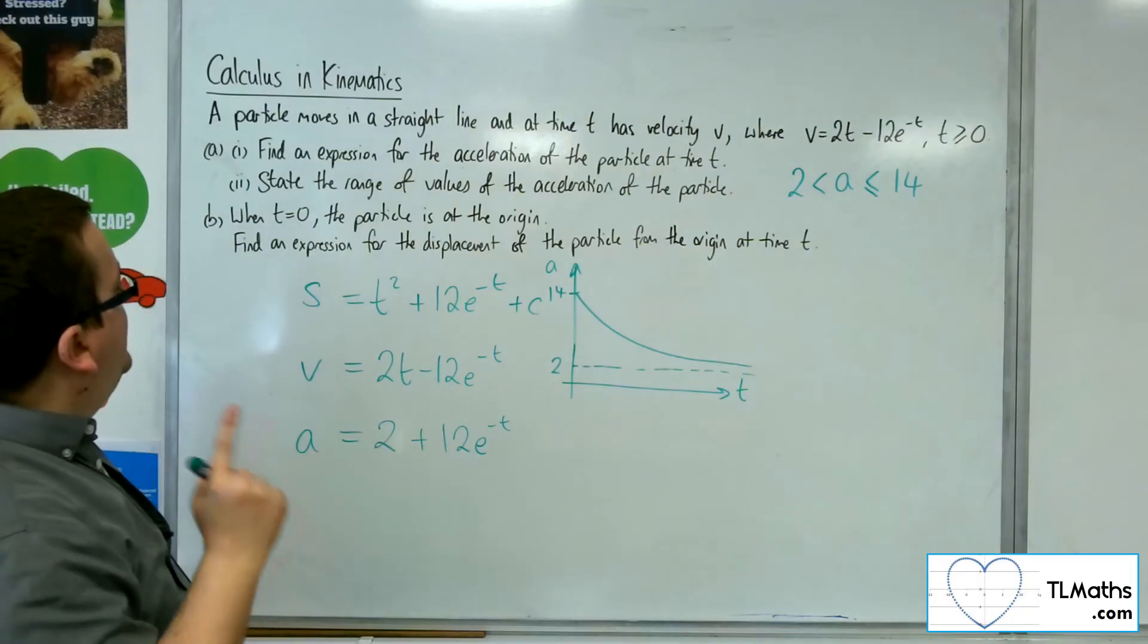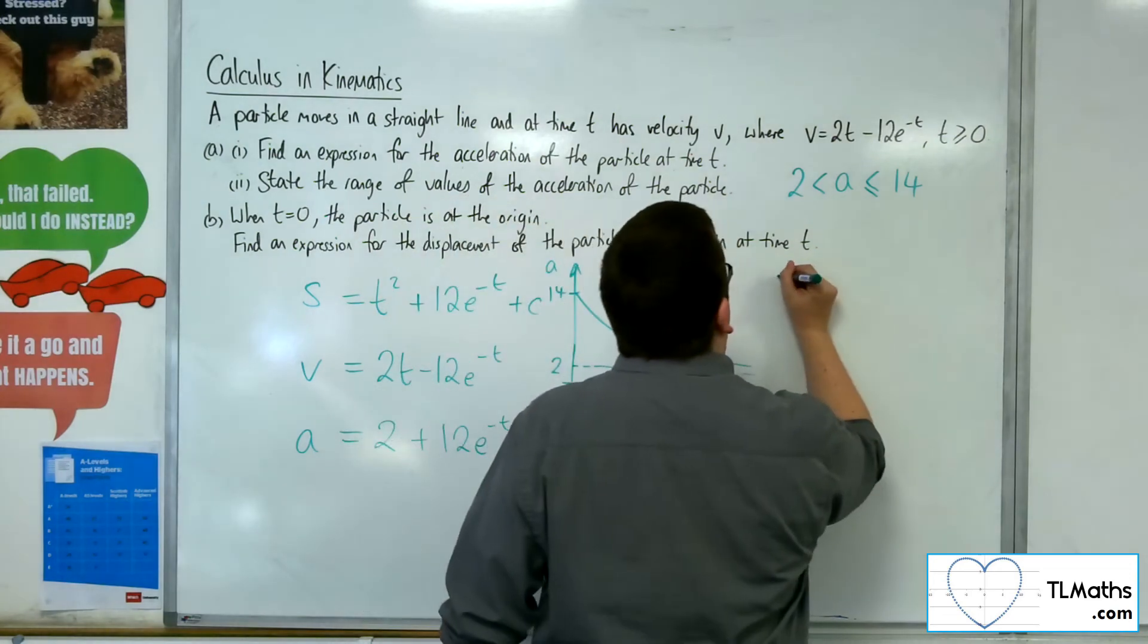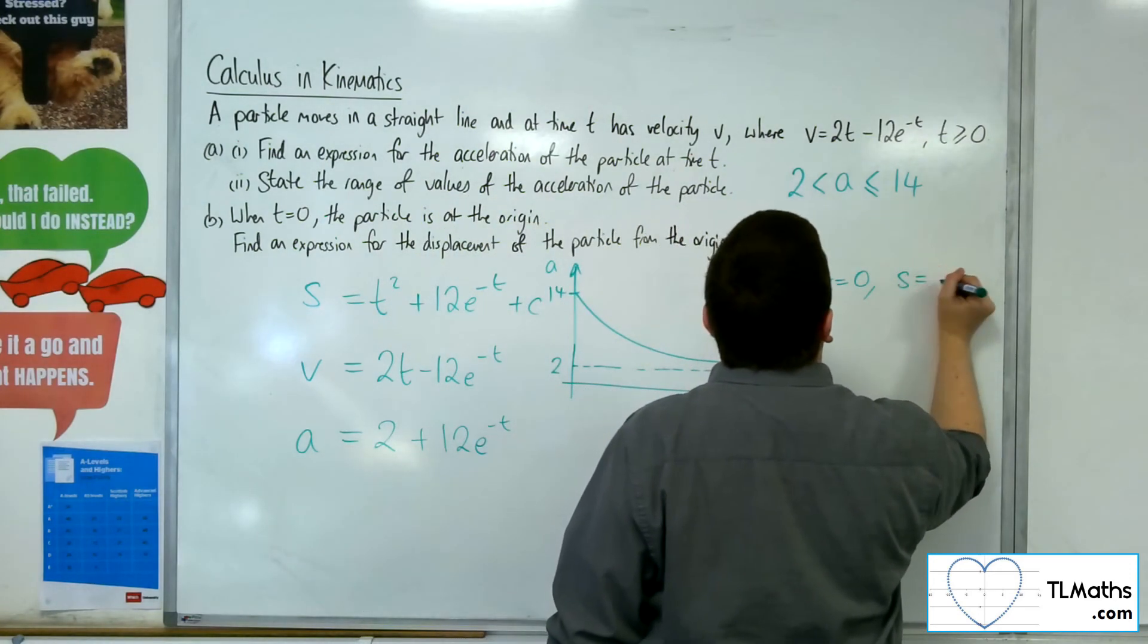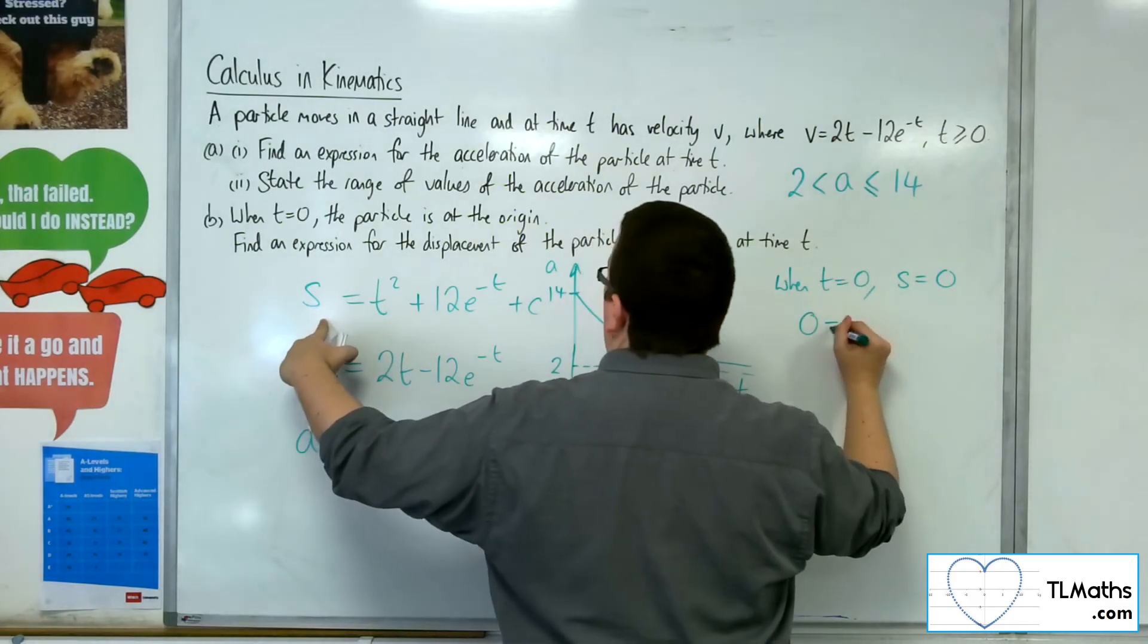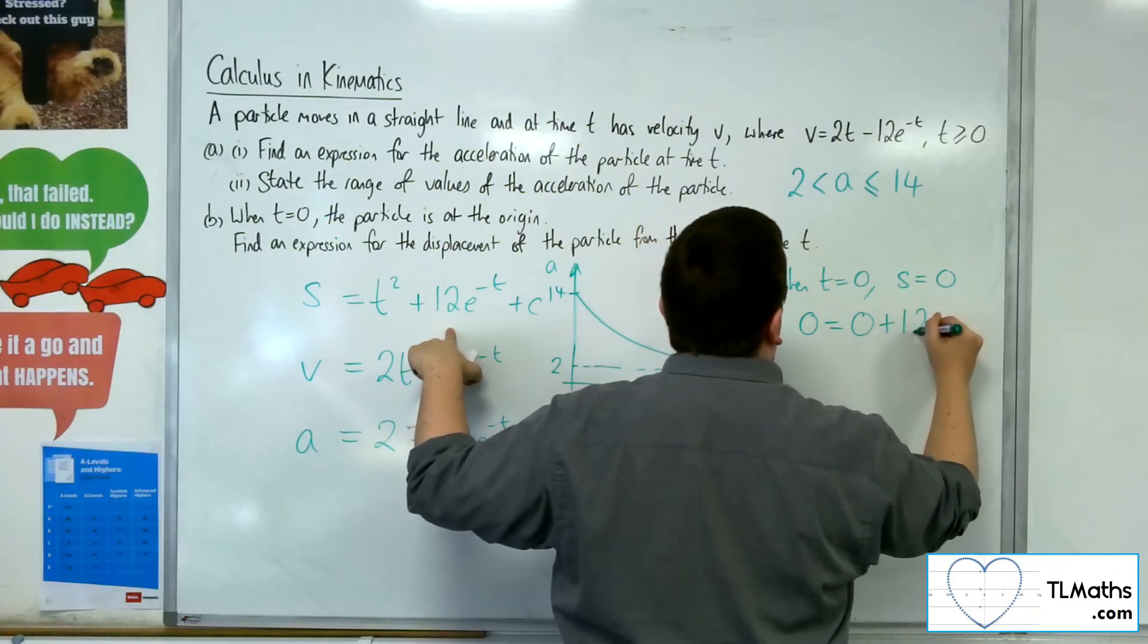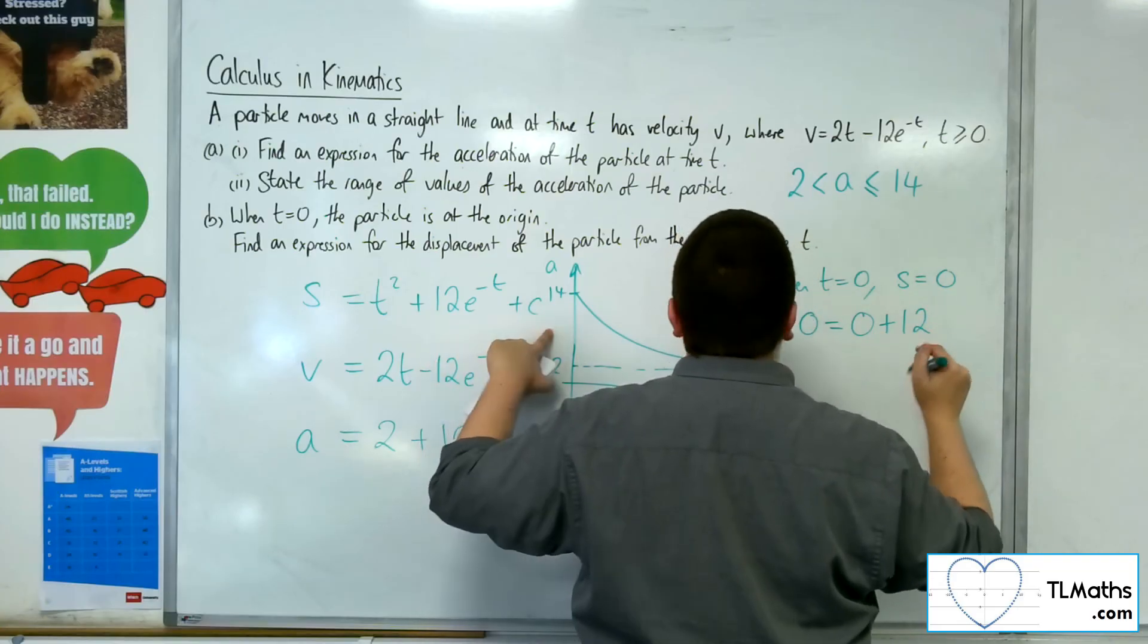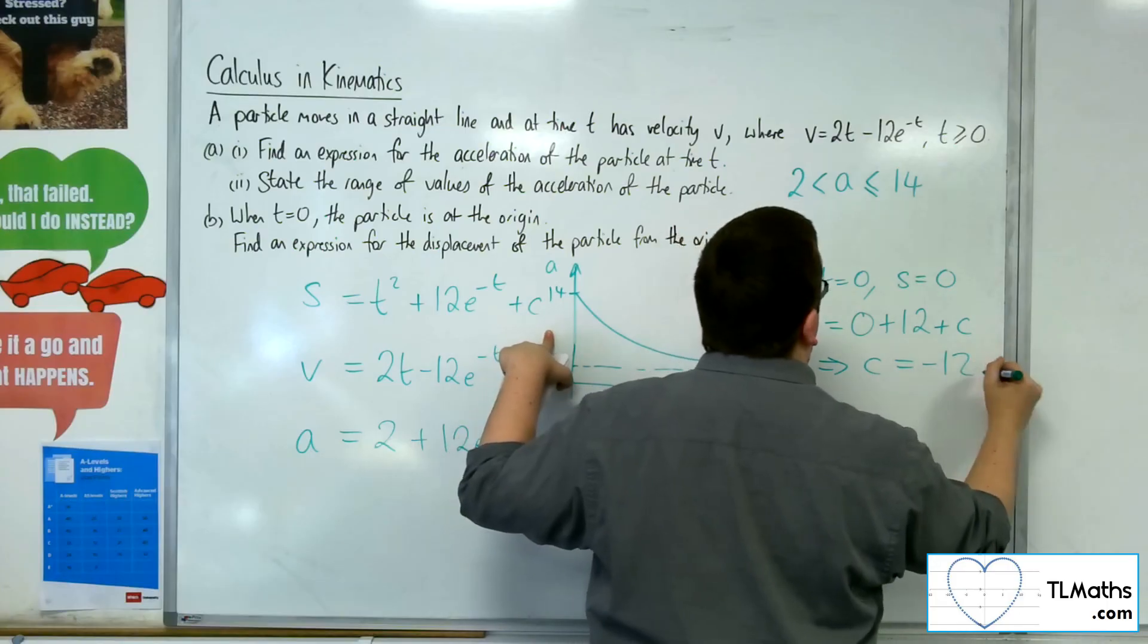Now I'm told that when t is 0, the particle is at the origin. So when t is 0, the displacement is 0. So we'll get 0 is equal to t squared, so 0 squared, plus 12 lots of e to the 0, which is just 1, so 12 lots of 1, plus c. So c must be minus 12.